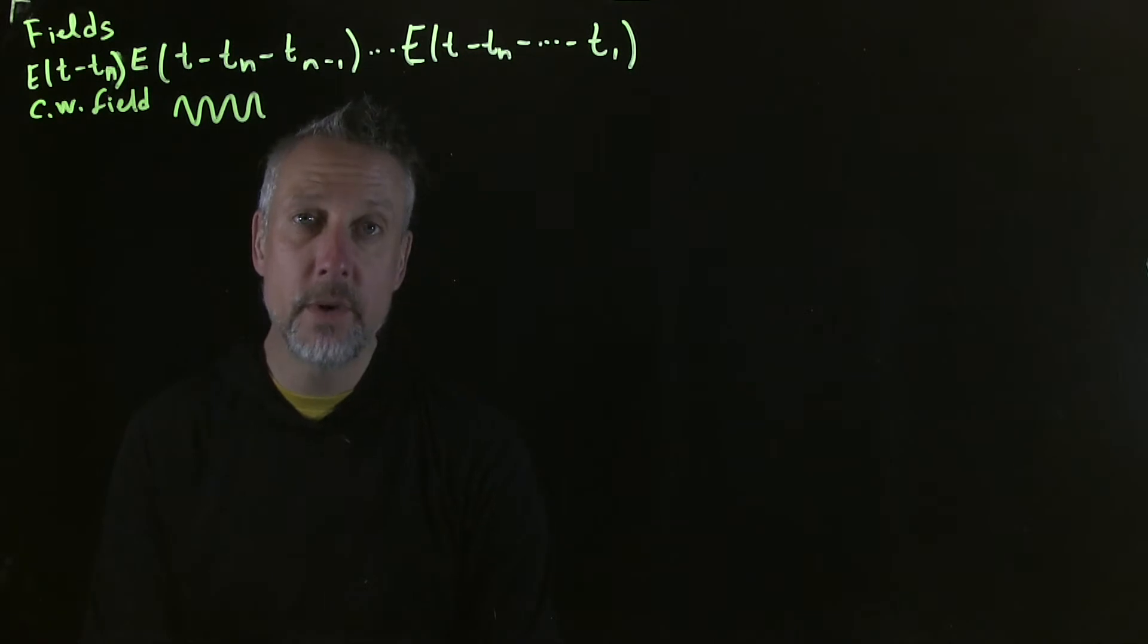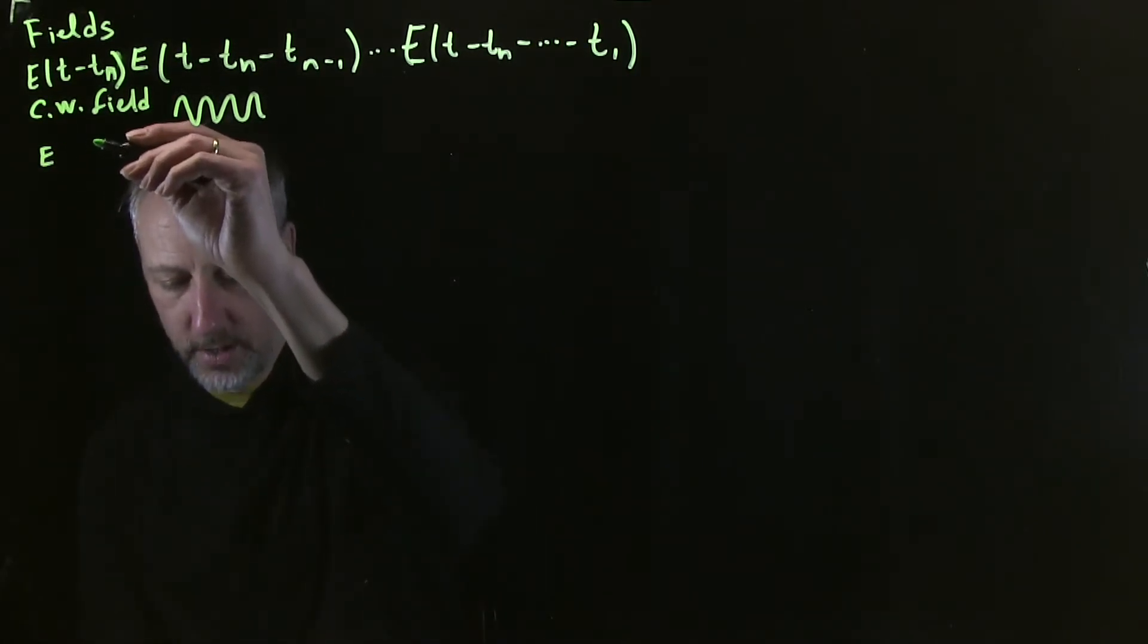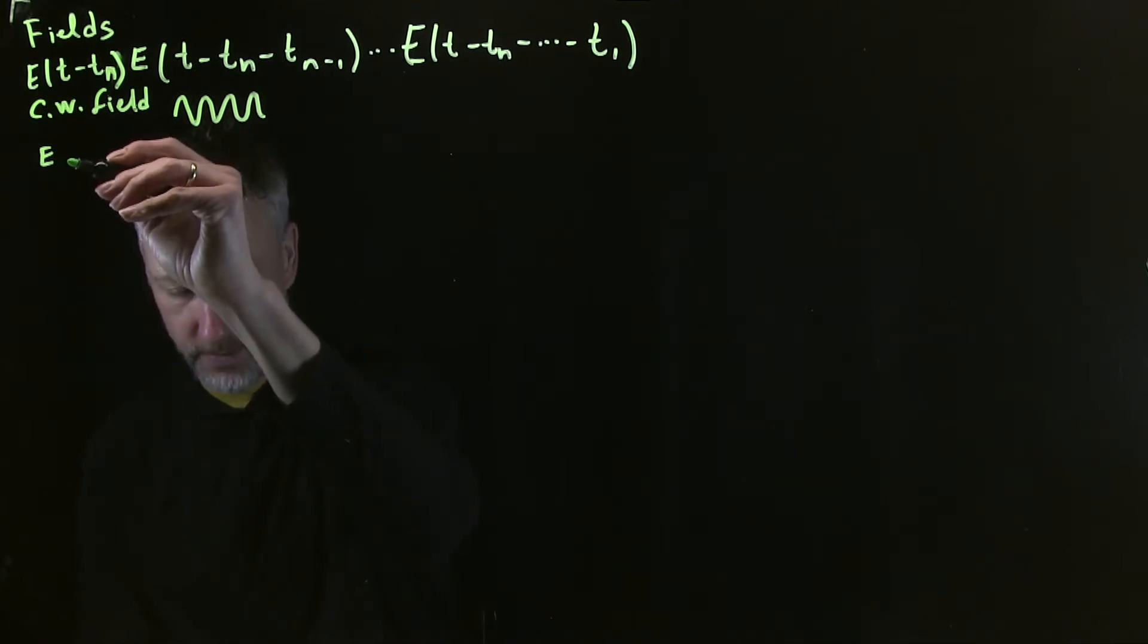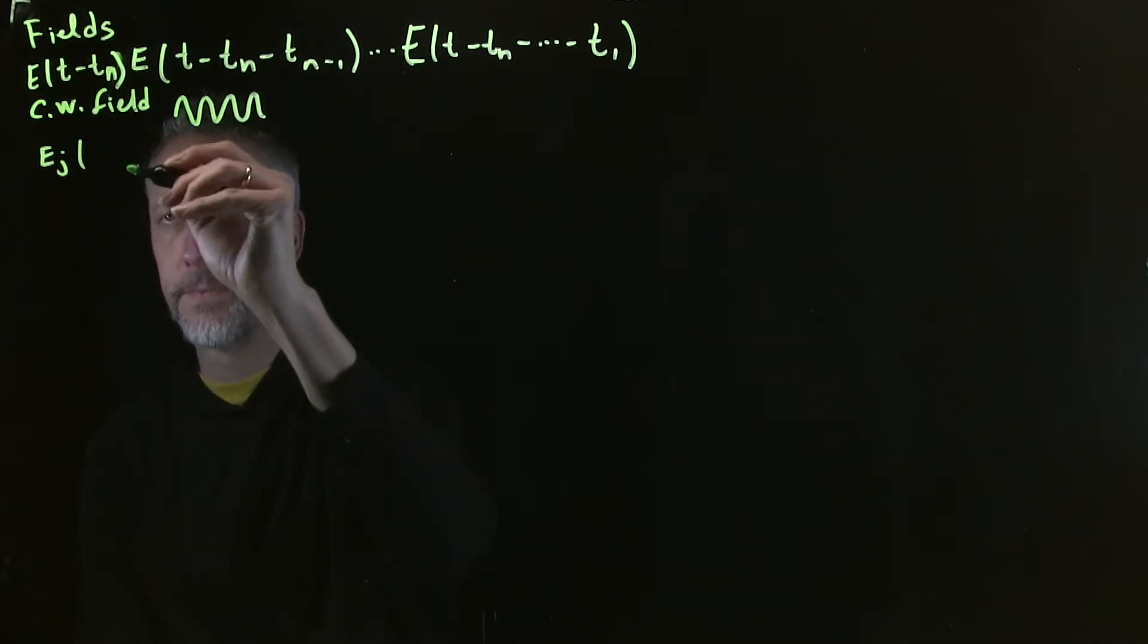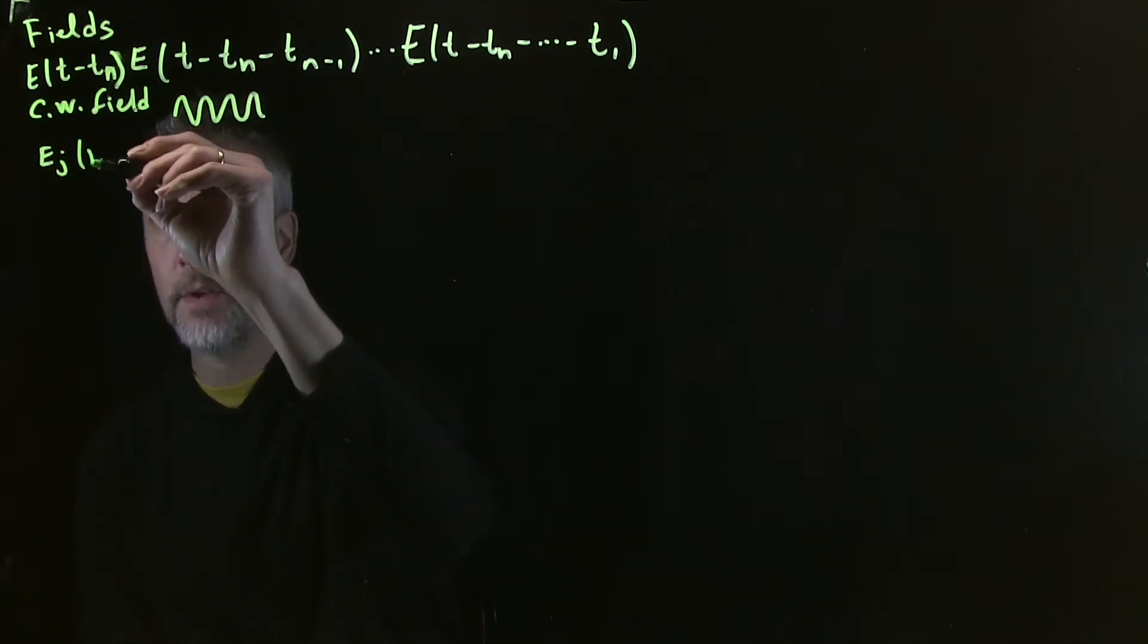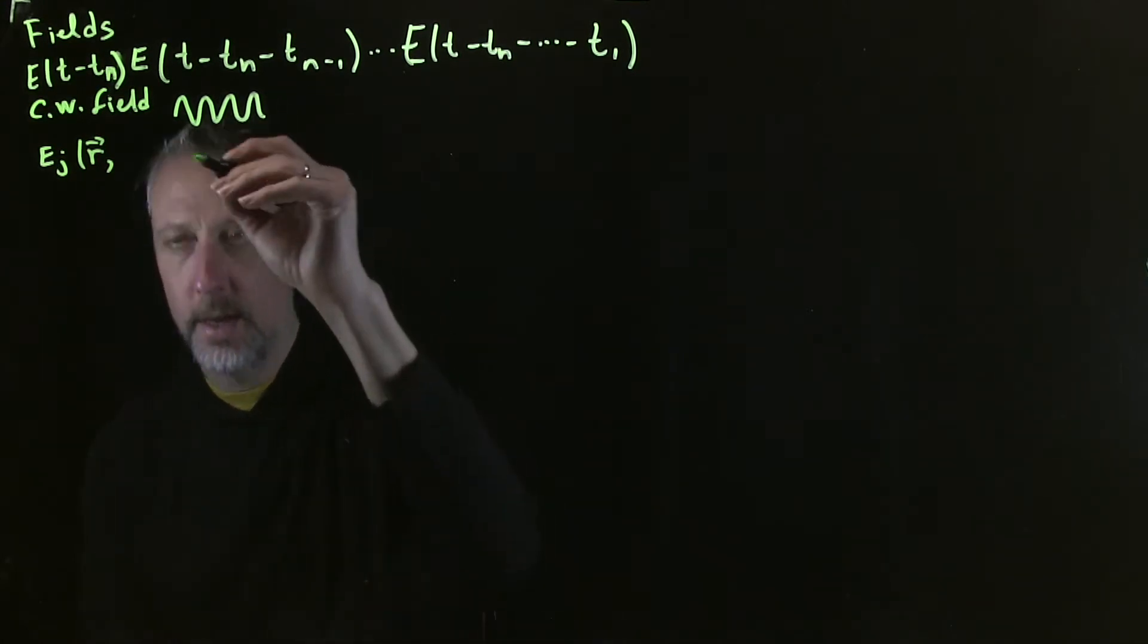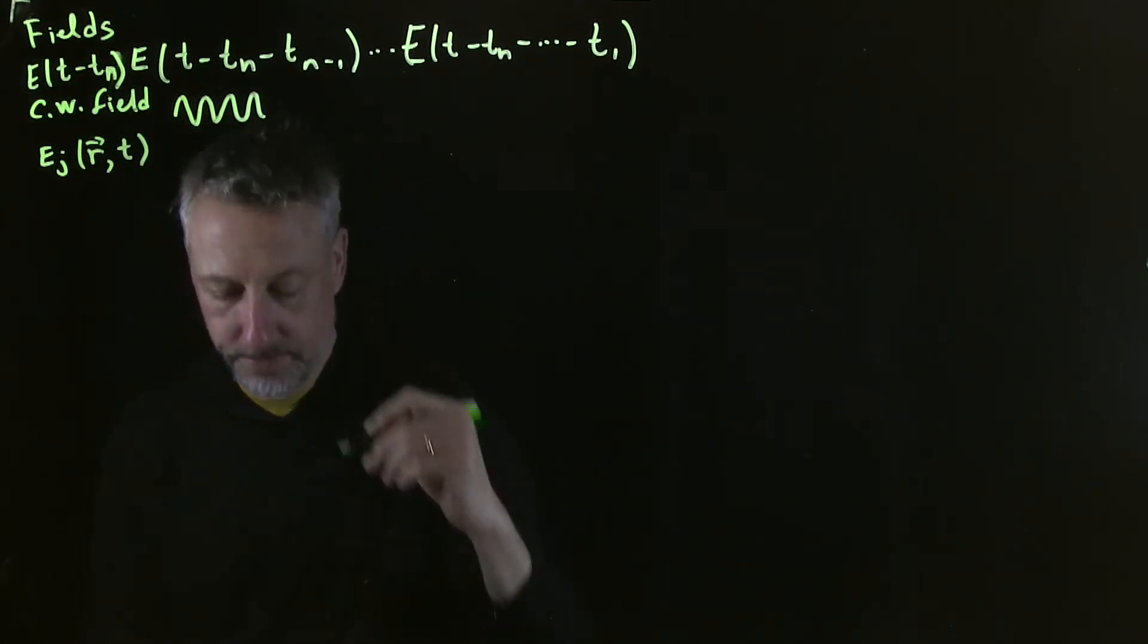What else do we need to remember? We need to remember that electric fields are fields. They have a definition in space, not just in time. So an electric field is going to be a function of, let's call this the electric field, the jth electric field. We might want to label them. And then it has a spatial component, which we can represent with a vector r, and a time parameter.